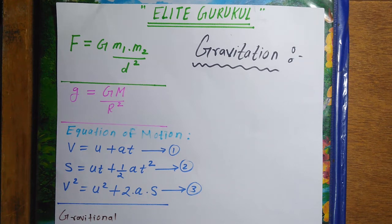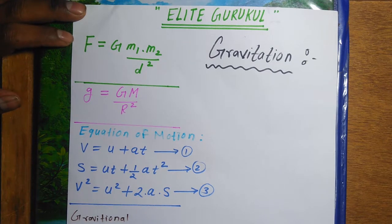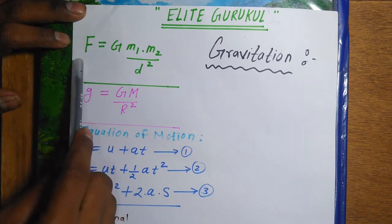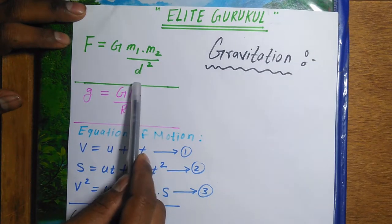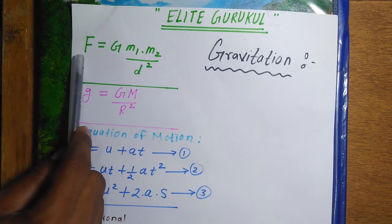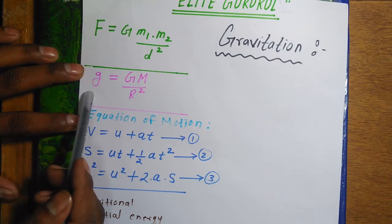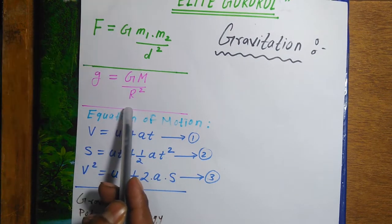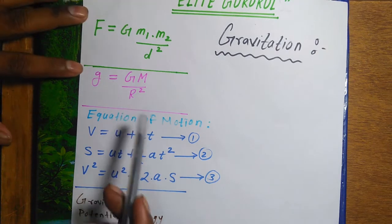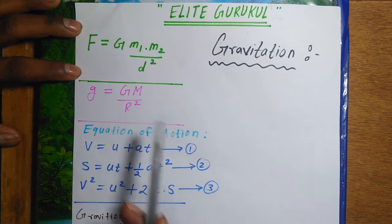Hello students, welcome to Elliot Guru Kool. Myself Shandhan sir, and today in this lecture I will solve some mathematical problems related to Gravitation. So let's start. Here in front of you I have written some formulas related to Gravitation. Let's revise them. Force equals G·M1·M2 / d², where if you have masses M1 and M2 separated by distance d, the formula for force of attraction is G·M1·M2 / d². The second is acceleration due to gravity: small g = G·M / R². Here G is gravitational constant, M is mass of earth, and R is radius of the earth.